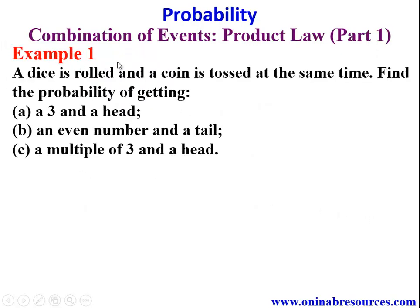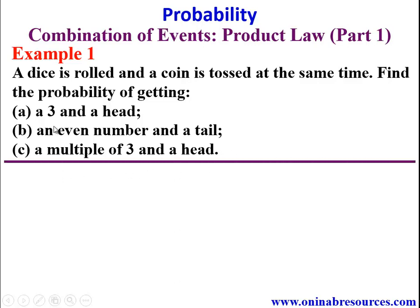Example 1: A die is rolled and a coin is tossed at the same time. Find the probability of getting: (a) a three and a head, (b) an even number and a tail, (c) a multiple of three and a head. Starting from part (a), we need the sample space.